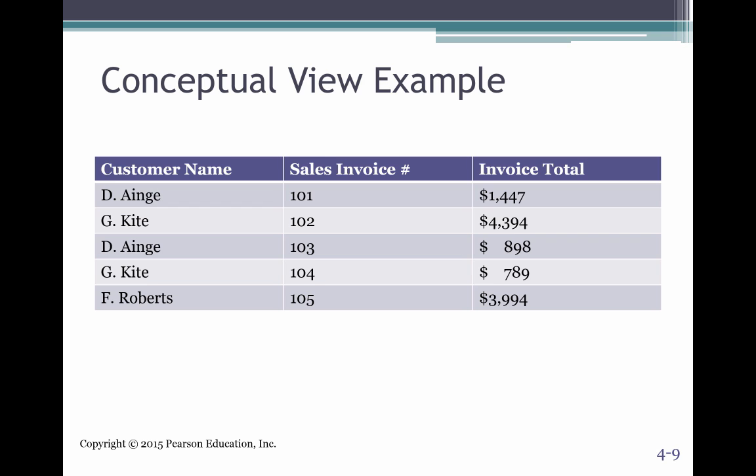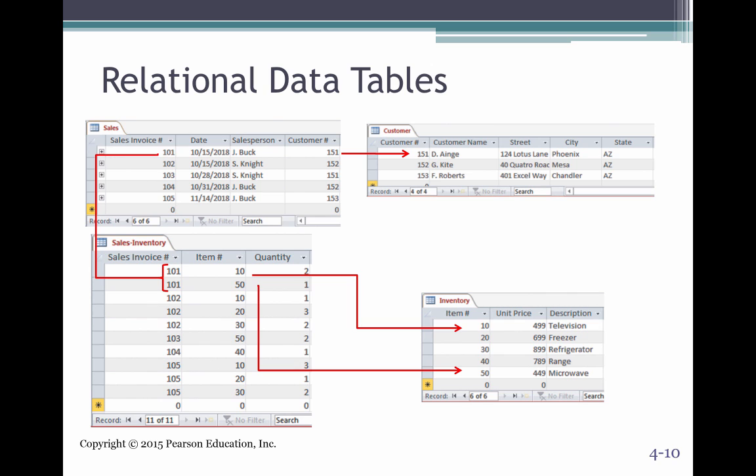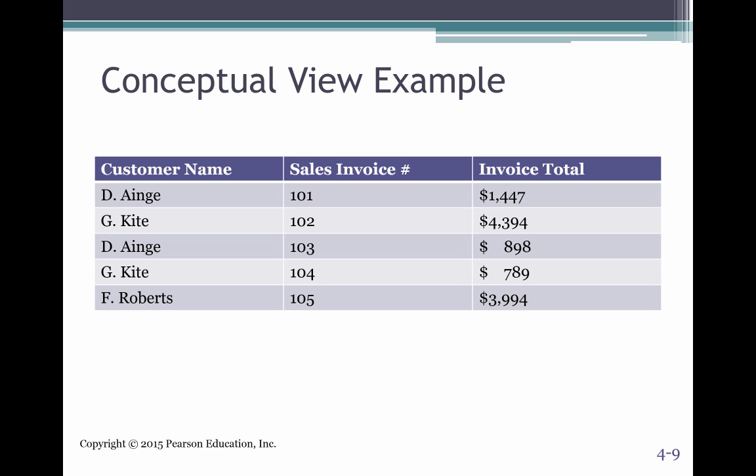So here's a conceptual view. We have our customer name, our sales invoice, and our customer total, and then where they all relate. So this is just your simple, like your end user report. Maybe this is your Excel spreadsheet that you give to your VPs to show them, hey, these are your customers. These are the invoices.